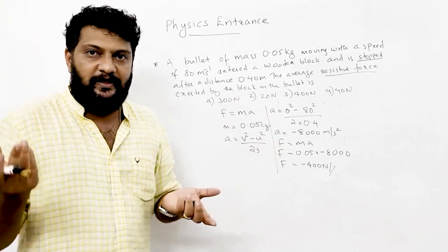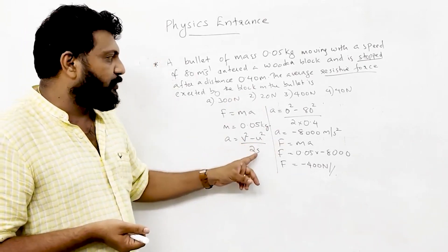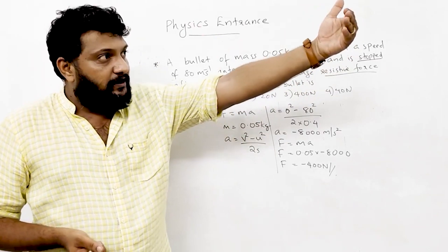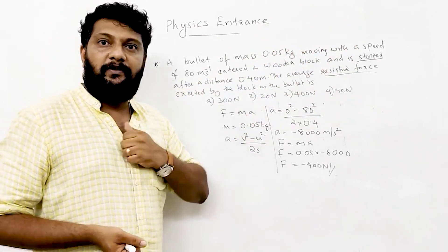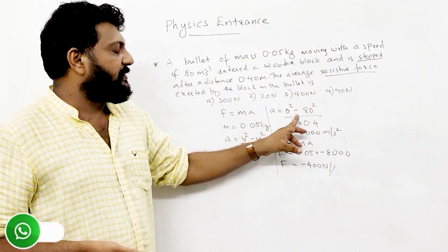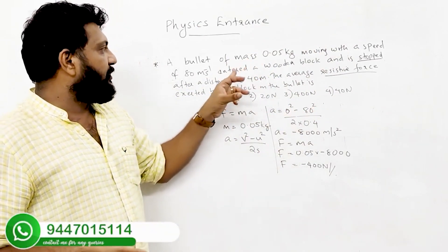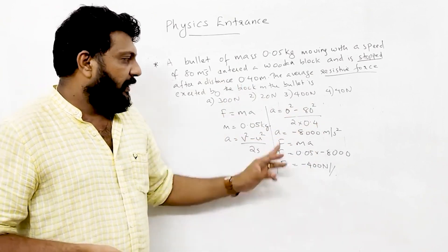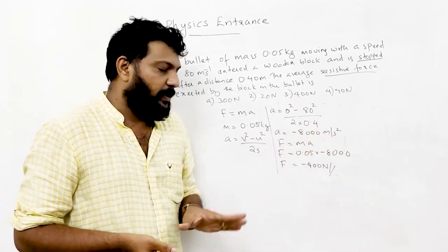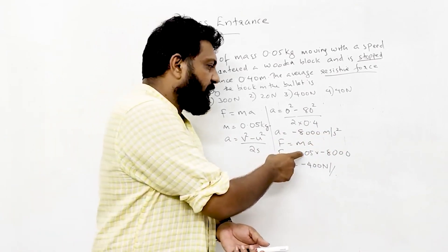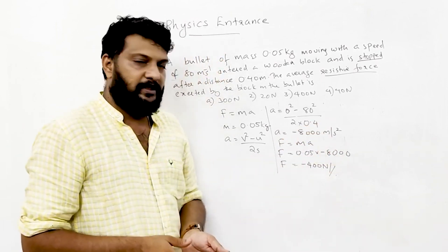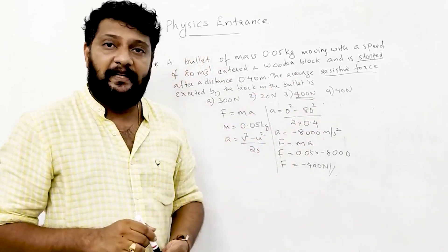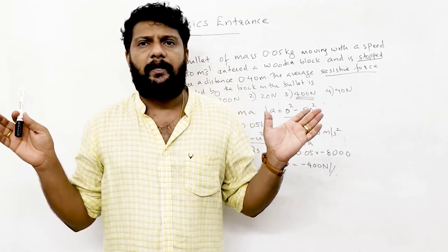Using v² = u² + 2as, with v = 0 and u = 80 m/s: a = -v²/2s. Then F = ma. The bullet enters the wooden block and stops.